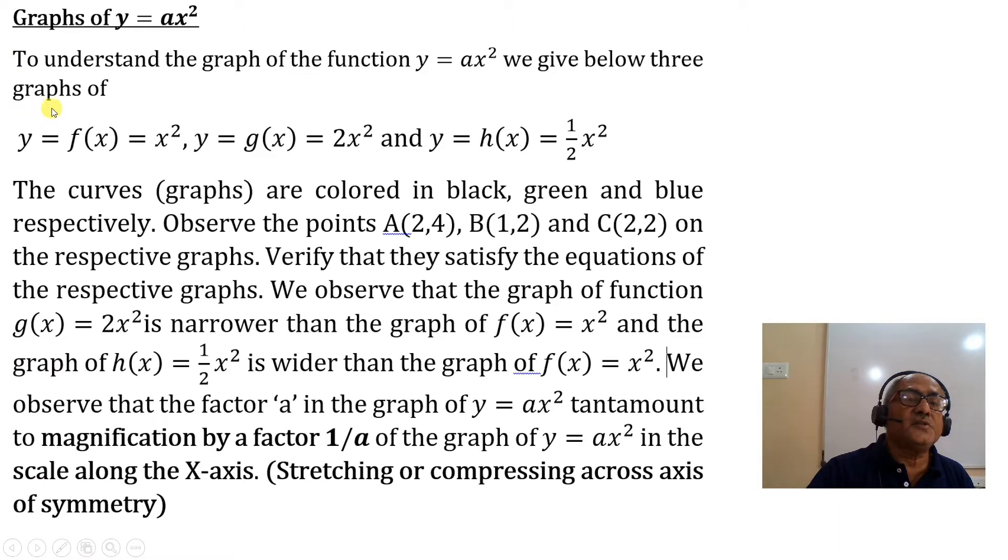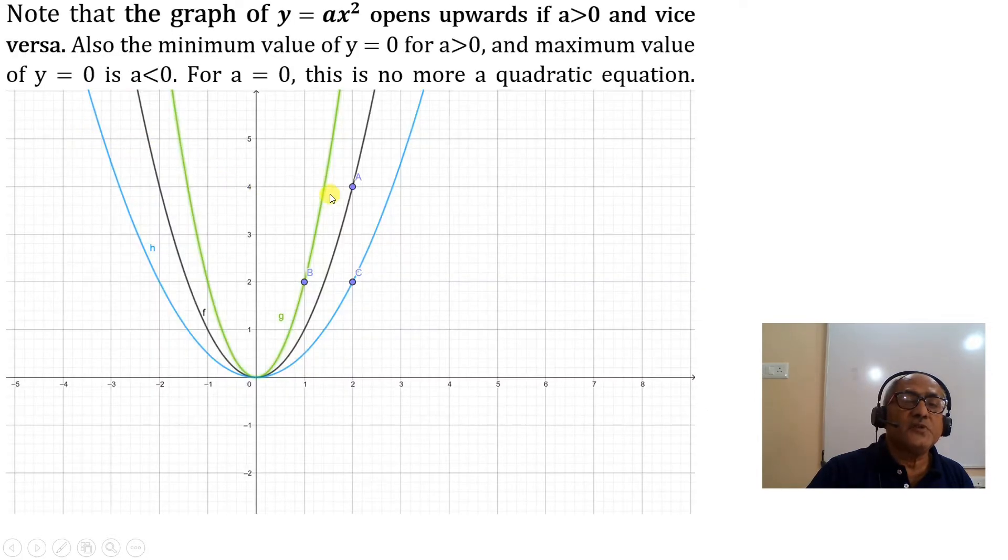So to understand this graph, let us graph three equations simultaneously. One is f(x) equals x squared, this black one.